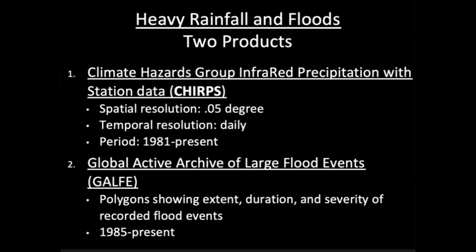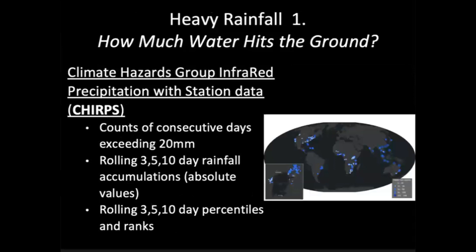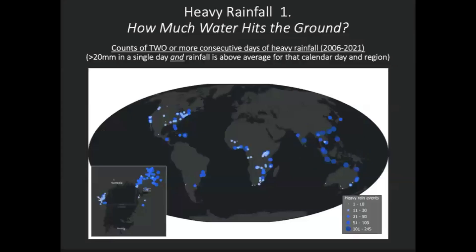We have two products. CHIRPS has a spatial resolution of about 0.05 degrees — approximately five by five kilometers — available from 1981 to present, updated every single month. The other product is a Global Active Archive of Large Flood Events (GAALF), which are polygons showing the extent, duration, and severity of recorded floods from 1985 to present. For heavy rainfall, we're looking at both absolute and relative metrics: counts of consecutive days of heavy rainfall exceeding 20 millimeters, and various rolling sums of rainfall — rolling 3-, 5-, and 10-day percentiles and ranks — giving a good picture of both relative and absolute measures.